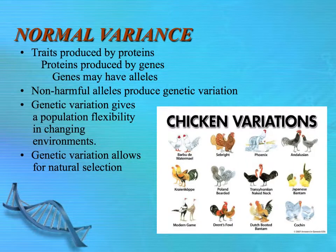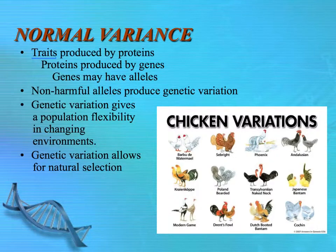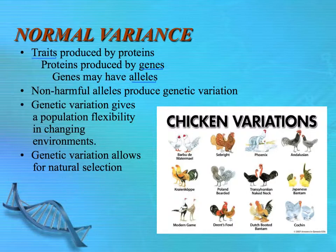This chapter on genetic variation starts with talking about what is normal variance — what kind of variation do we normally have in our genes? Everything that we are can be talked about in terms of certain traits: very obvious traits such as hair color, eye color, or musculature, or less obvious traits such as ability in music or math. These traits are produced by proteins, usually more than one. Proteins are produced by genes found on your chromosomes, and genes may have different alleles.